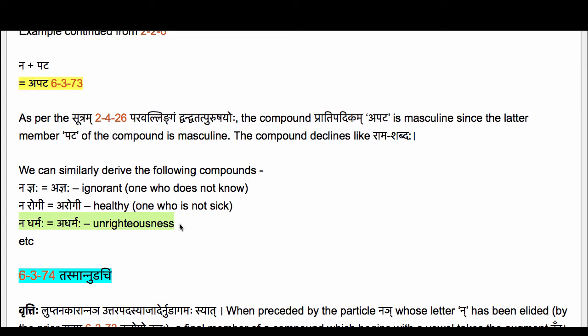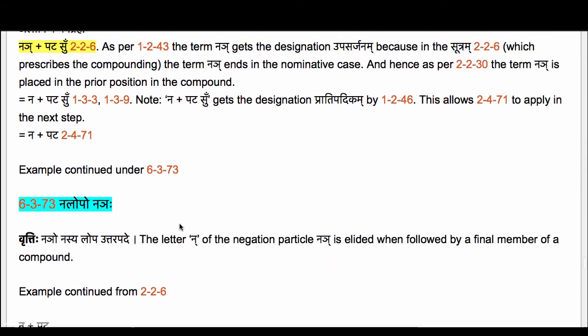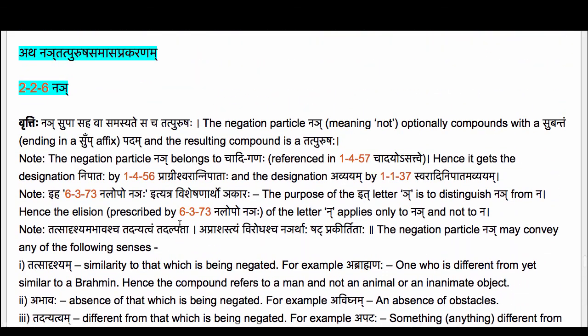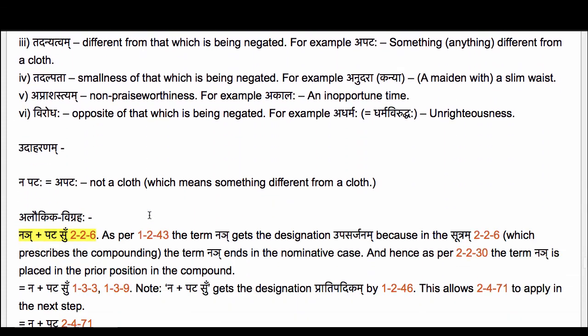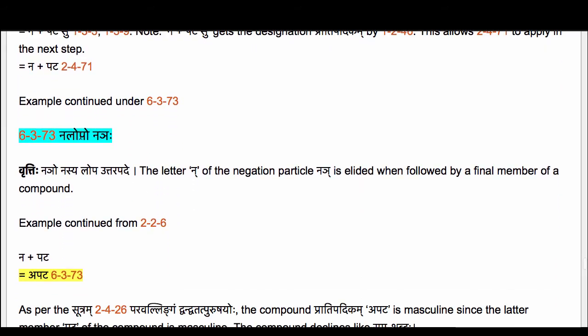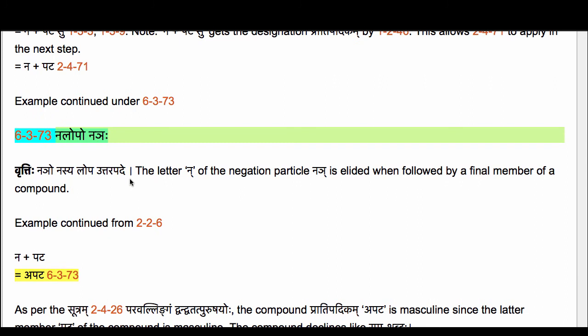All these compounds are derived first by using the Sutram 2.2.6 Nyai to authorize the compounding, and then using 6.3.73 Na Lopo Nyai to perform the Lopaha — elision of the letter Na of the particle Nyai. So whenever we use 2.2.6 to form a compound — it is a Tatpurusha compound using the particle Nyai — we have to apply Sutram 6.3.73, which comes and removes the letter Na of the particle Nyai.